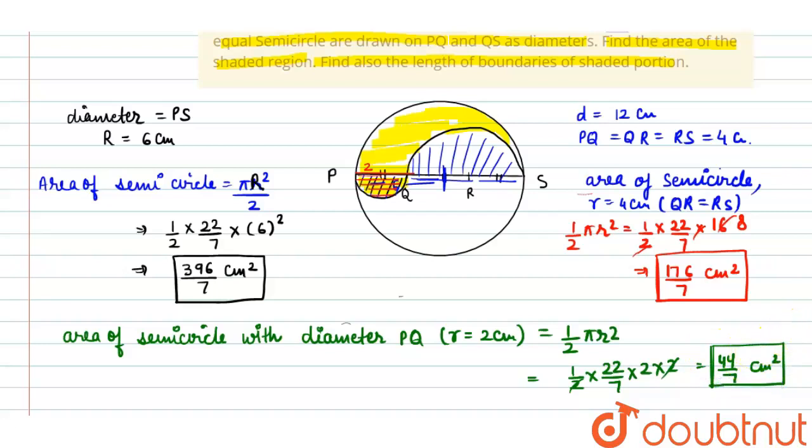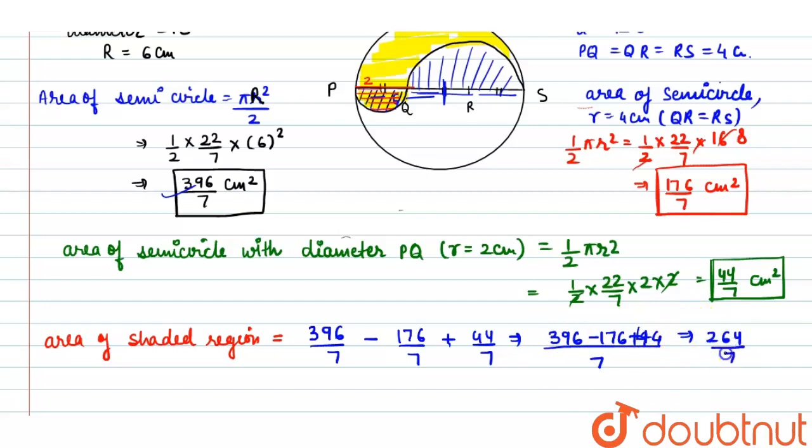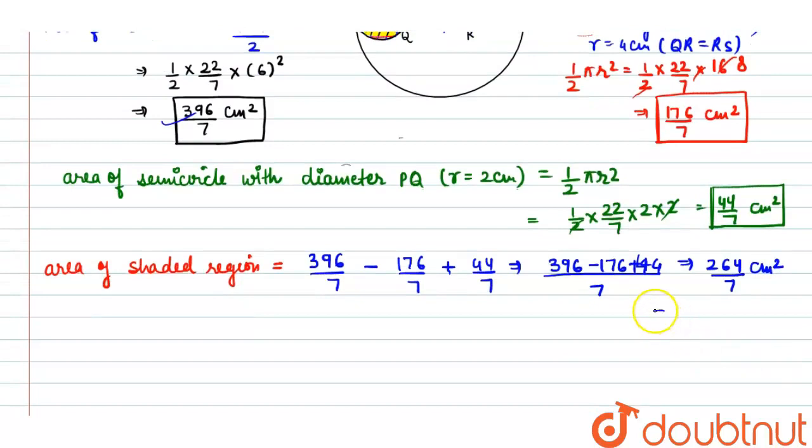Now, we get all the areas. We have to find the area of shaded region. We can say that area of only shaded region is equal to total area which is 396/7 minus area of this circuit 176/7 plus area of this small semi-circle which is 44/7. It means 396 minus 176 plus 44 upon 7. After solving, I get 264/7 cm² or in decimal form 37.71 cm². So area of shaded region is this one.